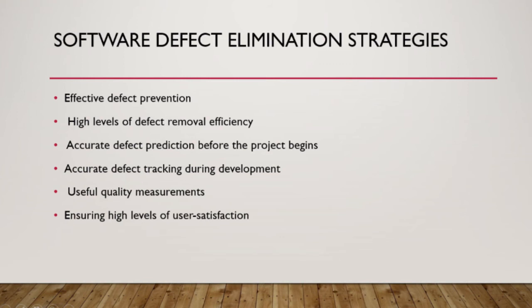There are many techniques for eliminating defects. The two most widely used in best-in-class software companies are defect prevention and defect detection. Other strategies include accurate defect prediction before the project begins and accurate defect tracking during development, both used for quality measurements and ensuring a high level of user satisfaction.